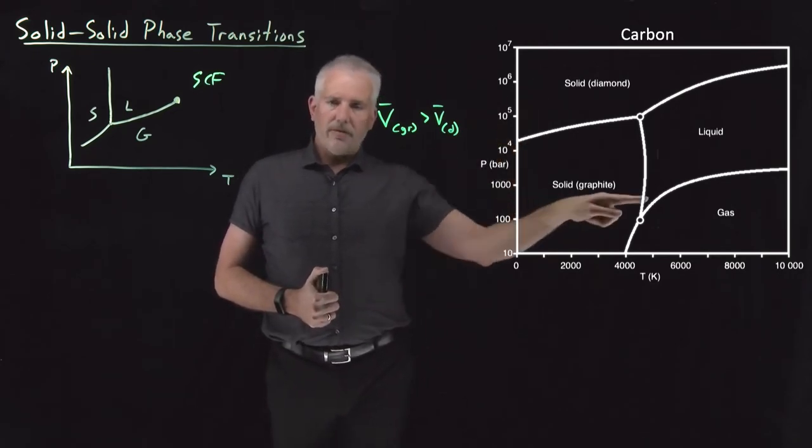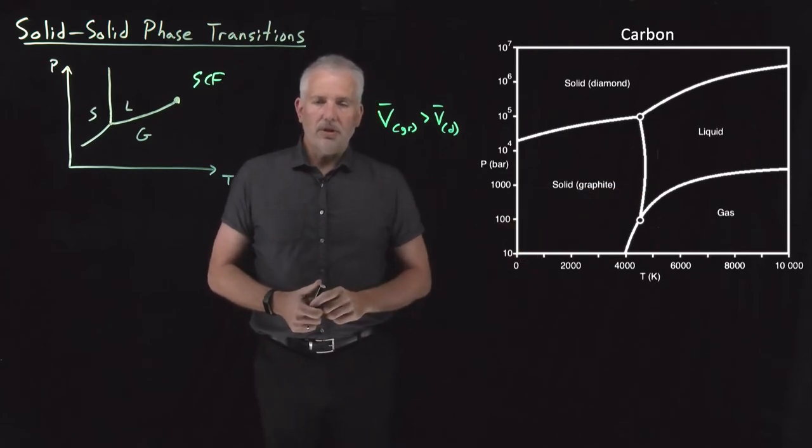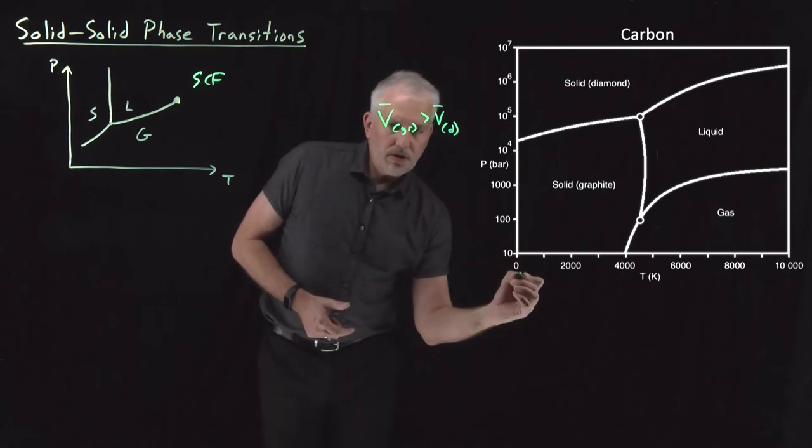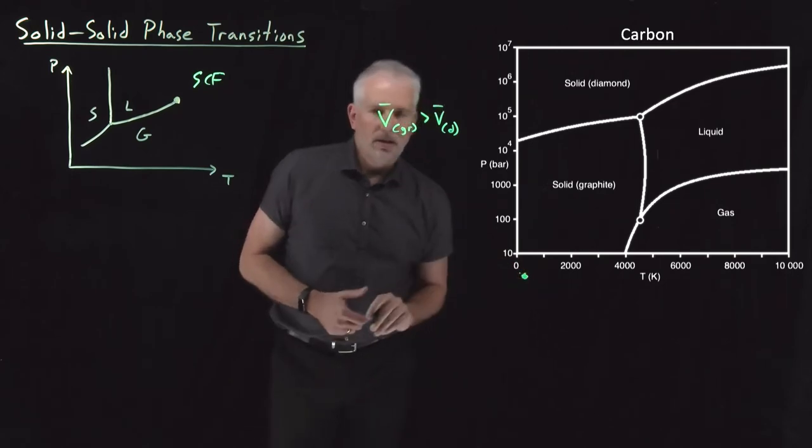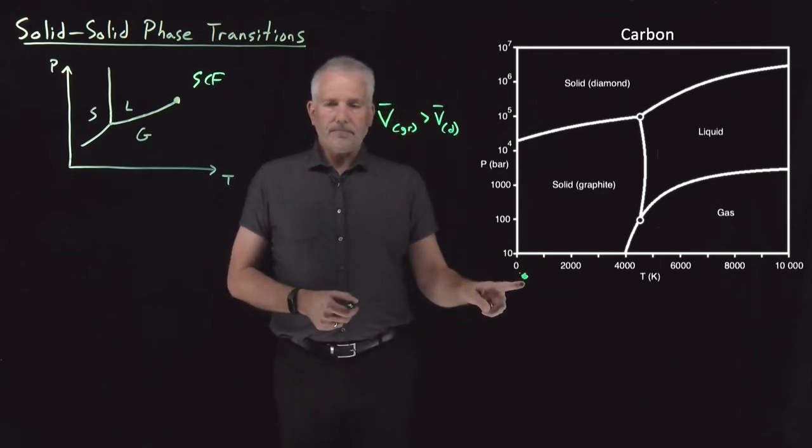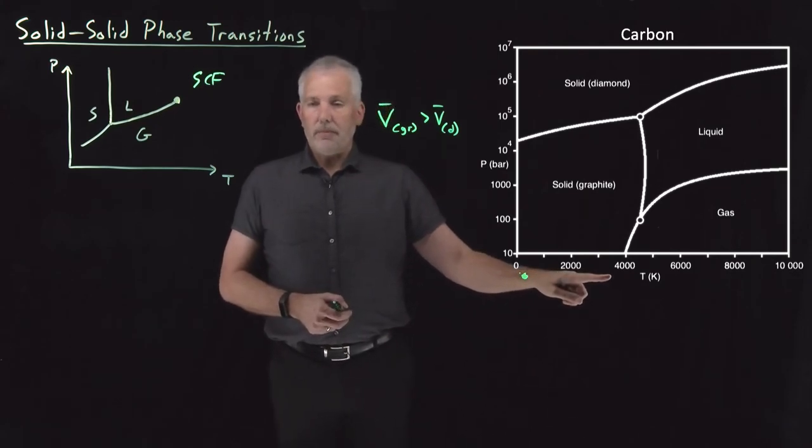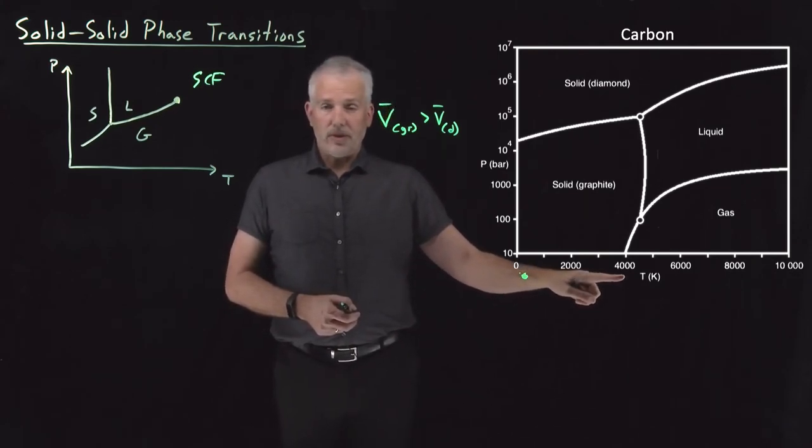We can talk about phase transitions as we increase the temperature. If we take our room temperature and room pressure sample of graphite, if I were to heat the temperature, trying to perhaps eventually melt a sample of graphite, it turns out we see that's not going to happen.